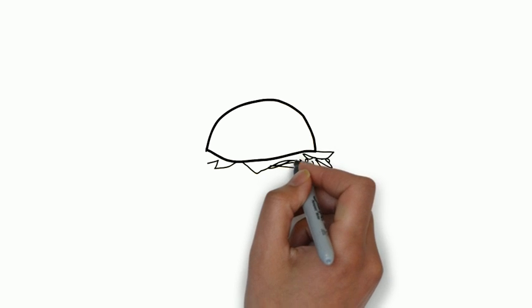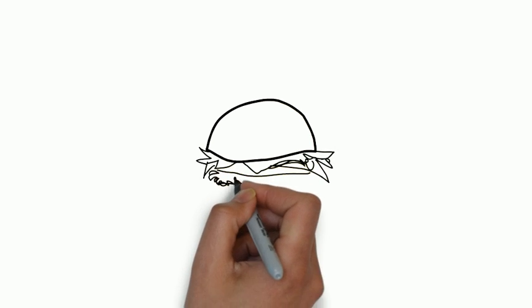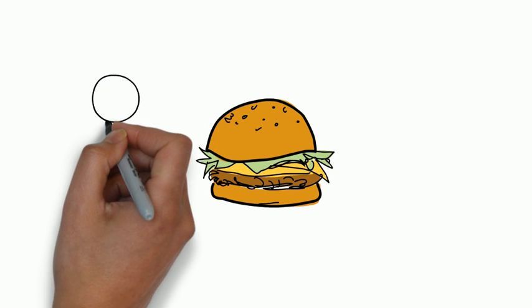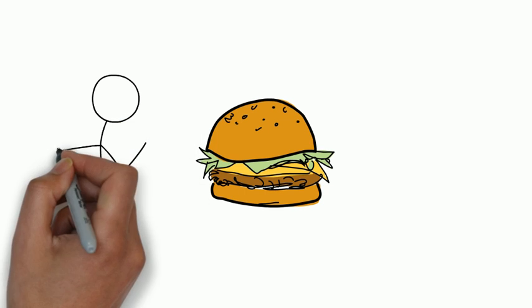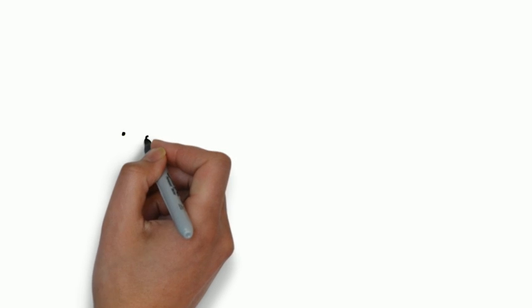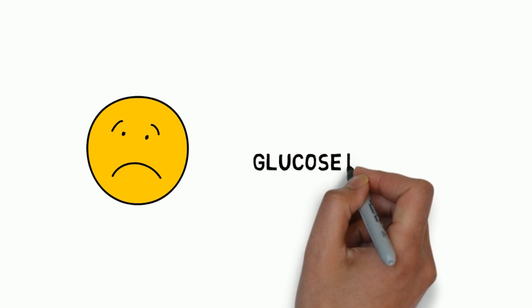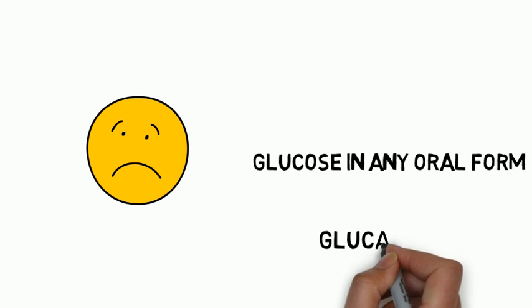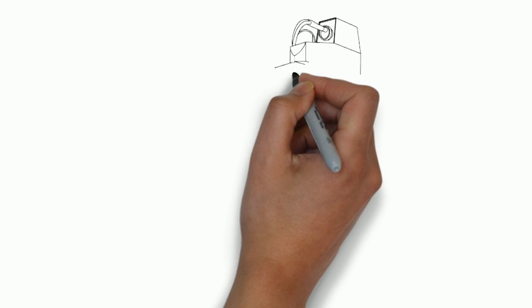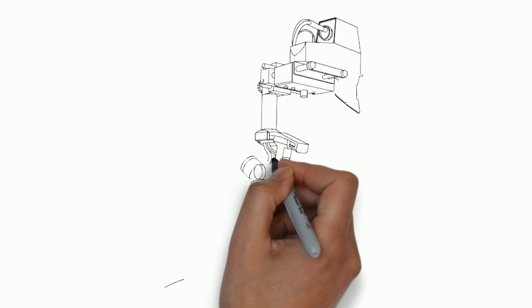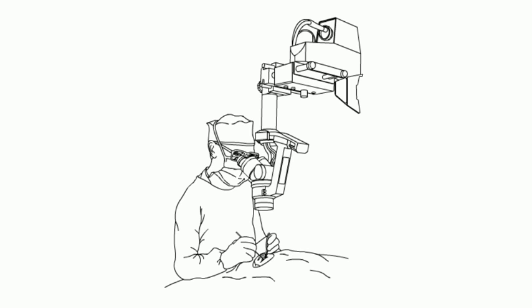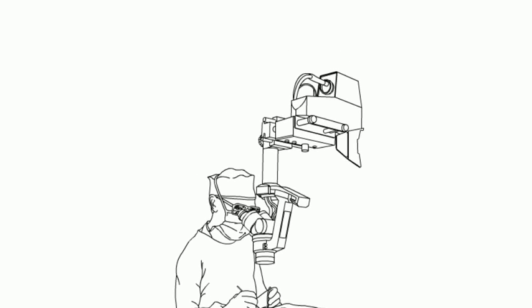Nutritional guidelines for diabetic patients include seeing a registered dietitian or diabetes educator. Saturated fat intake should be less than 7% of total calories, and weight loss is recommended for obese or overweight individuals. If a patient develops hypoglycemia, the preferred treatment for a conscious patient is glucose in any oral form. Patients at significant risk of severe hypoglycemia should be prescribed glucagon. Diabetics with a BMI greater than 35 and difficult-to-control comorbidities may be recommended for bariatric surgery; there is insufficient evidence to recommend surgery for those with a BMI less than 35.